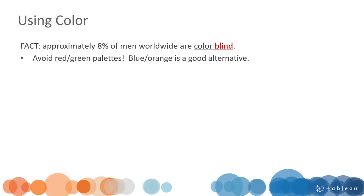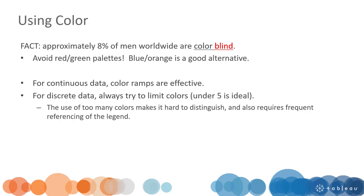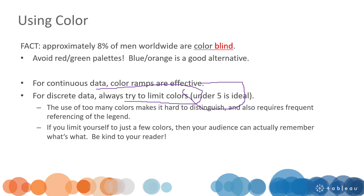When using colors, keep in mind that CVD is quite common, so we should try to avoid using red-green color combinations. For continuous data, use sequential or diverging color schemas. For categorical data, use categorical colors, but limit the number of colors — ideally five is the maximum for discrete or categorical data.